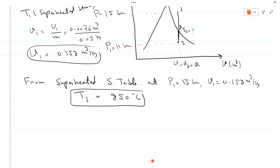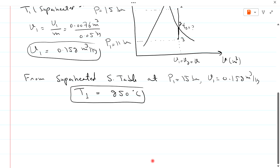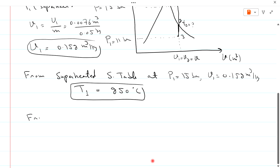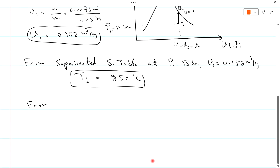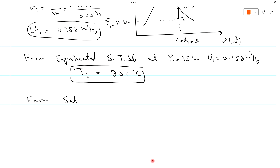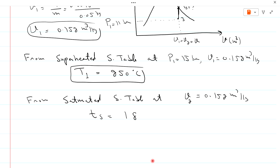Now find T2, the saturation temperature. T2 is on the saturated vapor line, so T2 will be the saturation temperature. From the saturated steam table at specific volume V2 — since V1 equals V2 because volume is constant — 0.152 cubic meters per kg, the saturation temperature T2 is equal to 184.1 degrees centigrade.